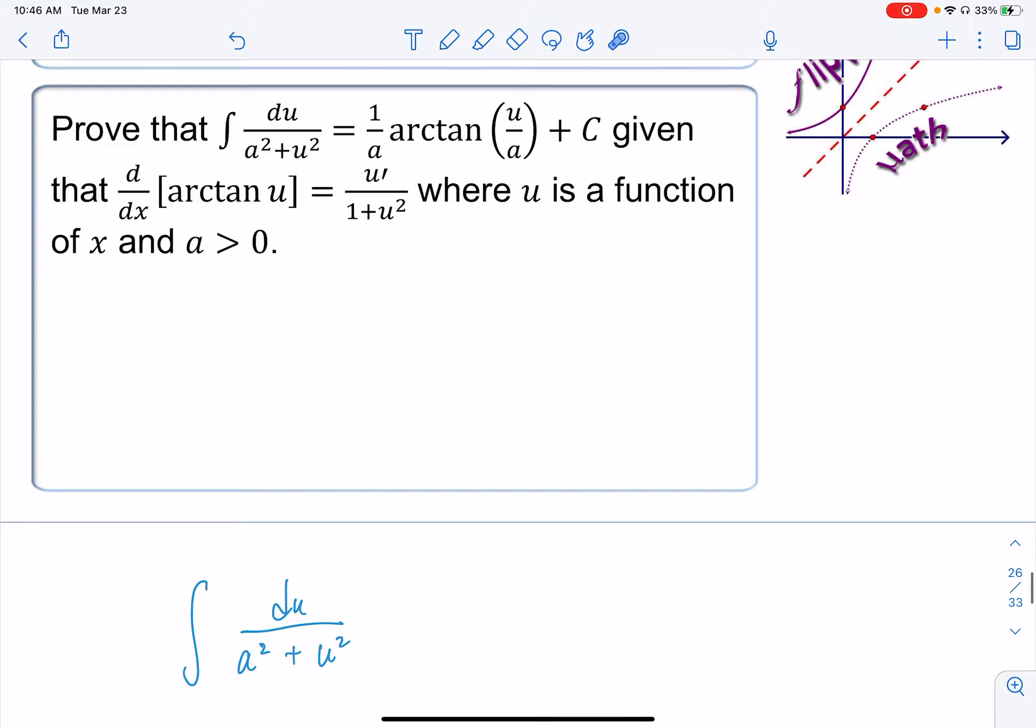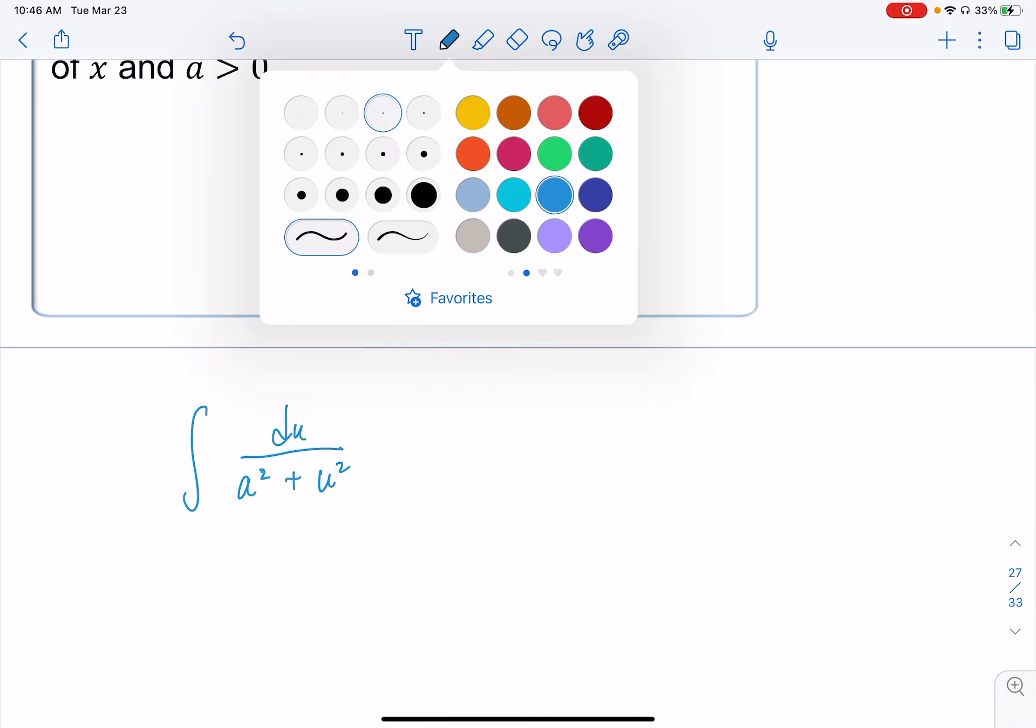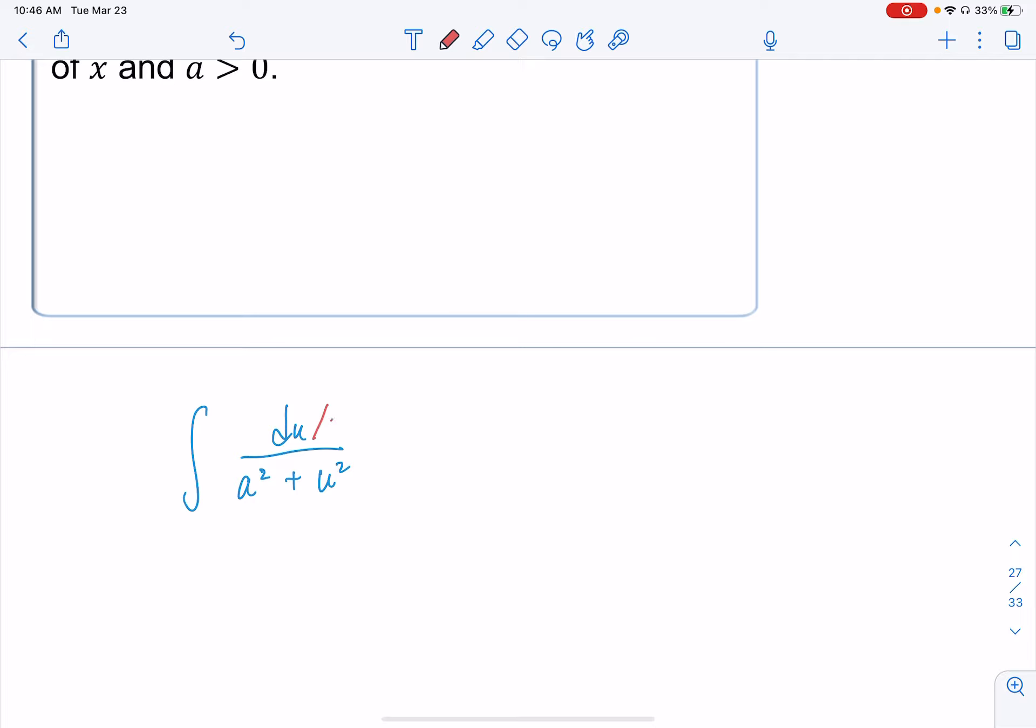The integral is du/(a² + u²). The coefficient of the first term has to be 1. It's not a 1, so we have to fix it by dividing everything by a² to force a 1 in that spot. Divide by a², divide this by a², divide this by a².